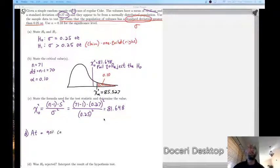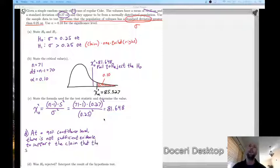And so we can go through and phrase our final answer here by stating that at a 90% confidence level, there is not sufficient evidence to support the claim that the volumes of standard deviations is greater than 0.25 ounces.